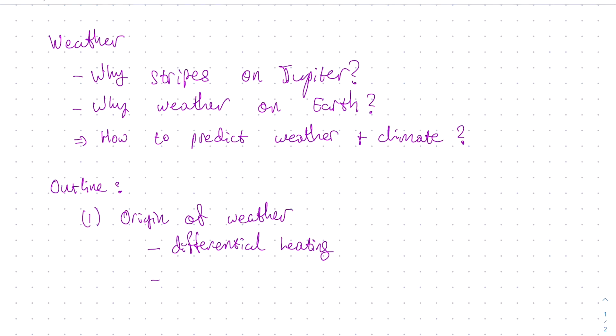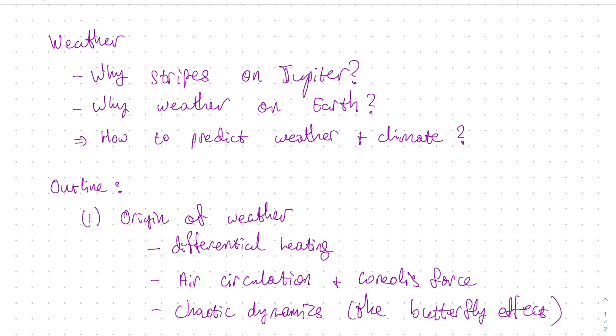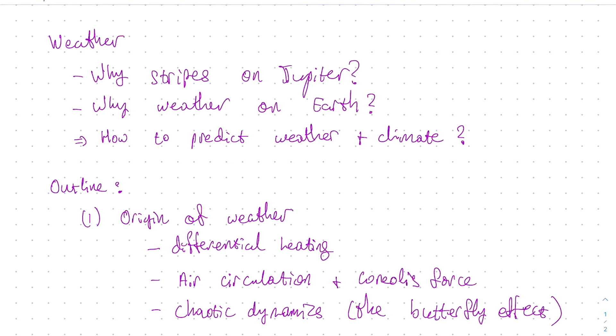Differential heating, that is, why the equator is so much warmer than the poles of the Earth. Next, we will look at global air circulation and the Coriolis force, which causes air movement all around the planet. And finally, we will discuss chaotic dynamics, also known as the butterfly effect. This will answer the question, why don't we just set up a steady-state flow, why does the weather change from day to day?